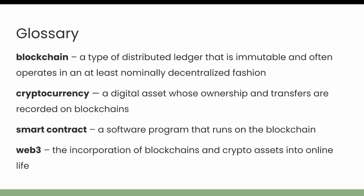A cryptocurrency is a digital asset whose ownership and transfers are recorded on blockchains. These are sometimes used to incentivize the maintenance of the network — for example, people who operate Bitcoin miners or Ethereum validators are rewarded with Bitcoin and Ether respectively. But there are also other assets issued on existing chains used solely for speculation or various other projects.